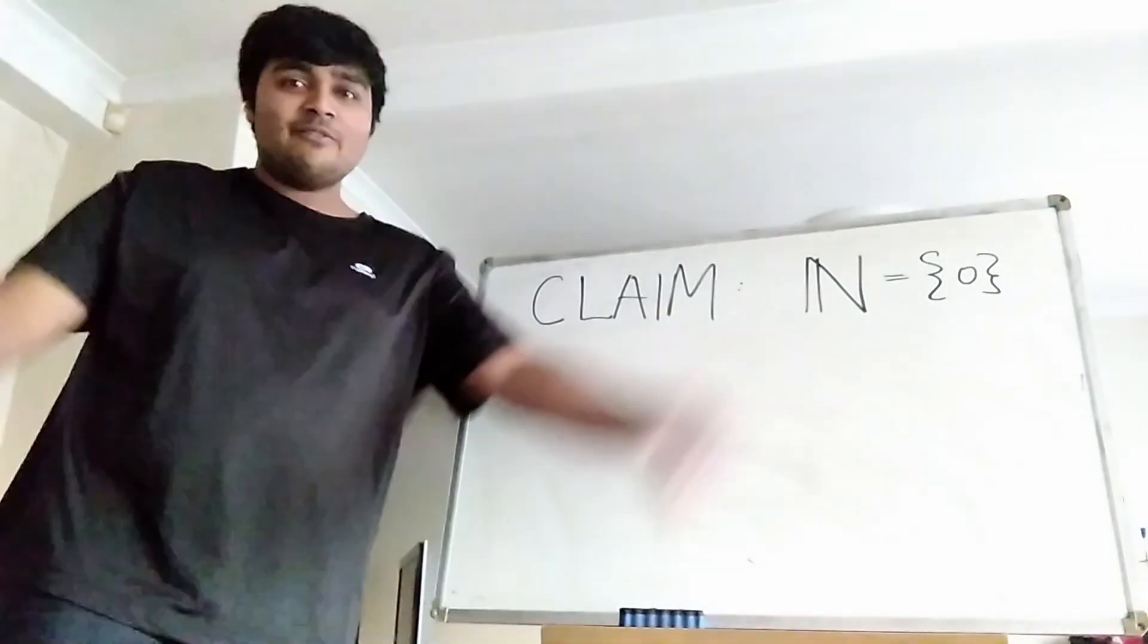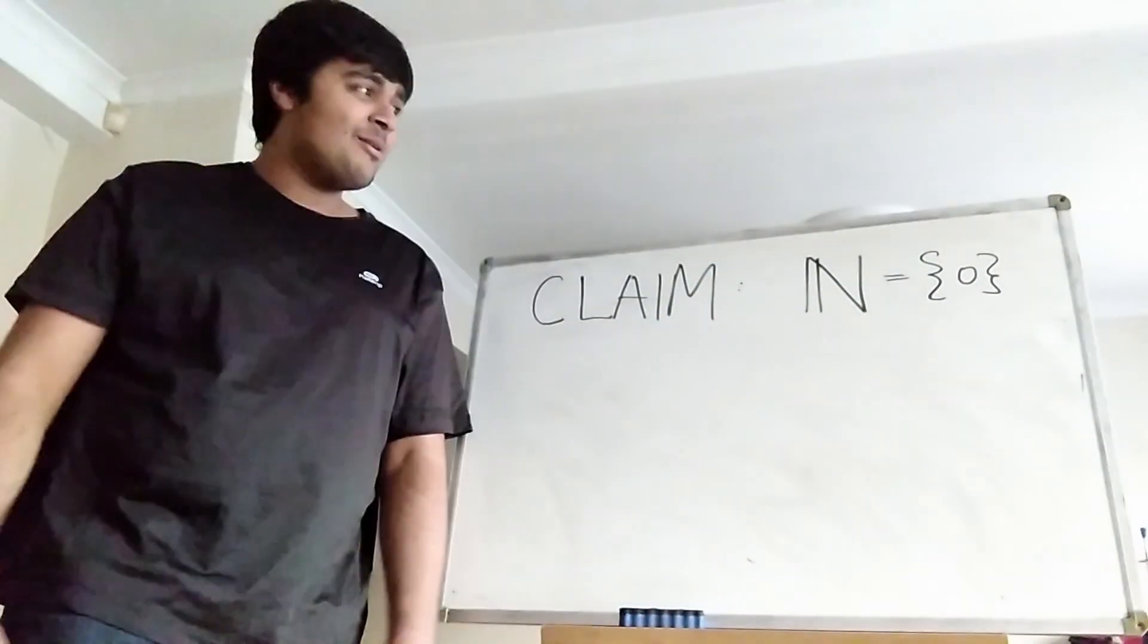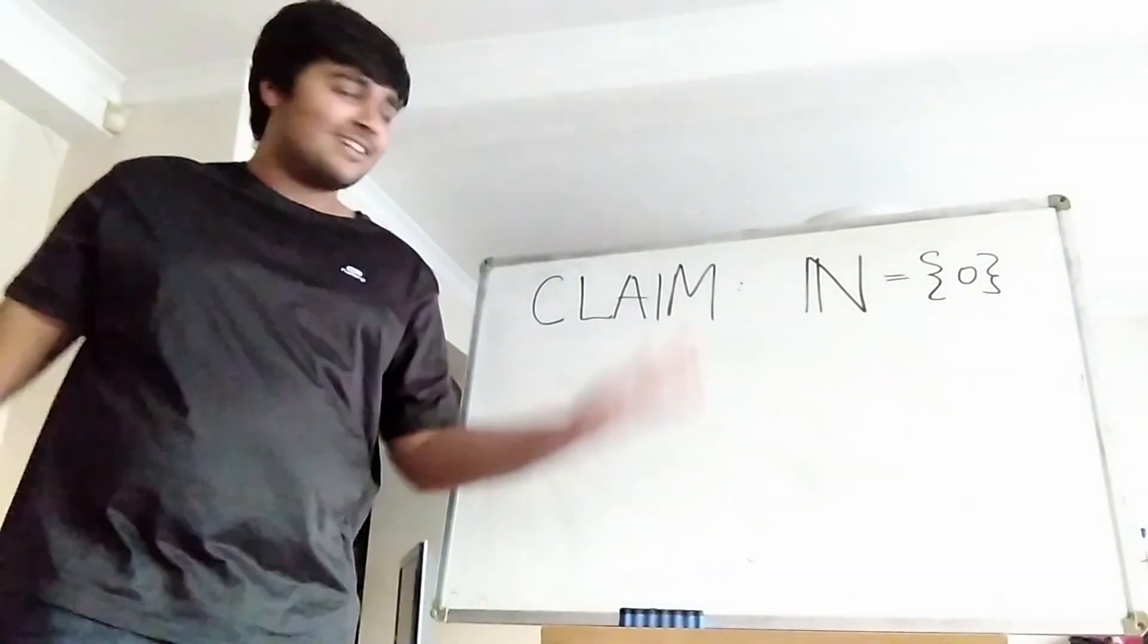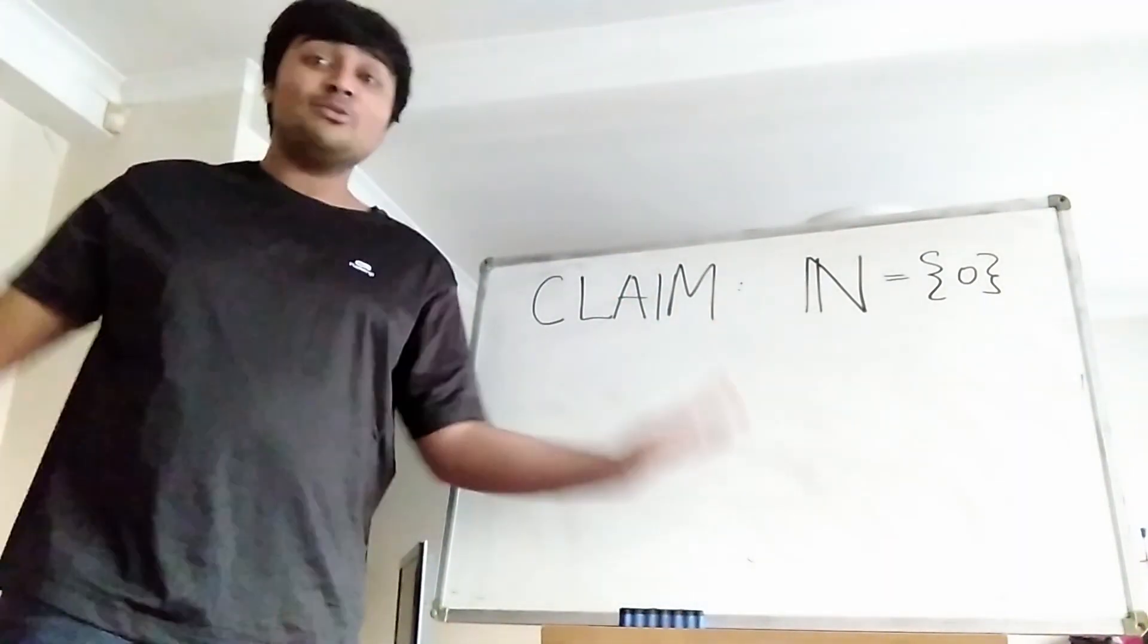So one equals zero, two equals zero, 428 also equals zero. Of course this is a false proof because that's absurd, that can't be true. But I want to see if you can spot the mistake.